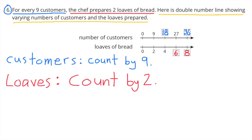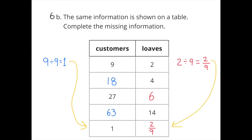Number 6: For every nine customers, the chef prepares two loaves of bread. A double number line shows varying numbers of customers and loaves prepared — the customers count by nines and the loaves count by twos. For the table, since every nine customers get two loaves, I divided by nine to find one customer gets two-ninths of a loaf of bread.